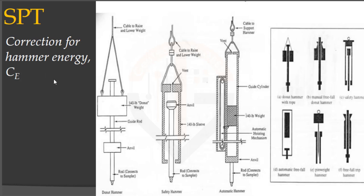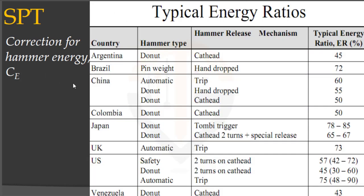This table shows the correction values against different types of hammers used in different regions of the world. For example, in Argentina for a donut type hammer, an energy ratio of 45% is typically applied. Similarly, for other hammer types in different regions, different energy corrections are applied.